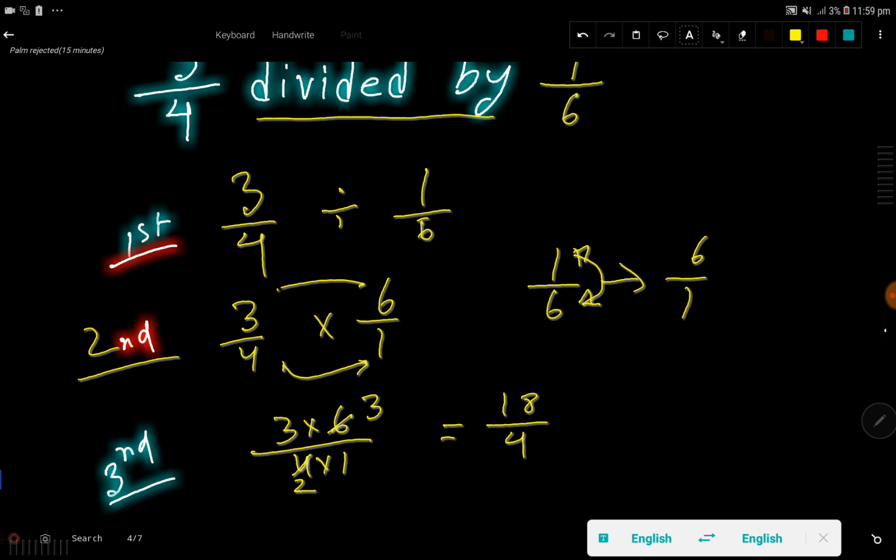So basically we are getting here 3 times 3 divided by 2. That is 9 over 2. And 18 by 4 equal to 9 over 2.